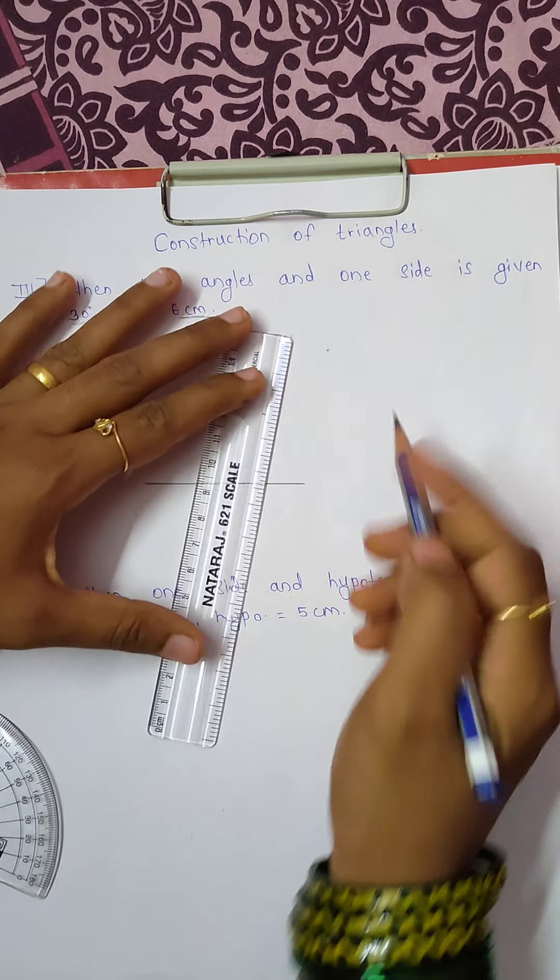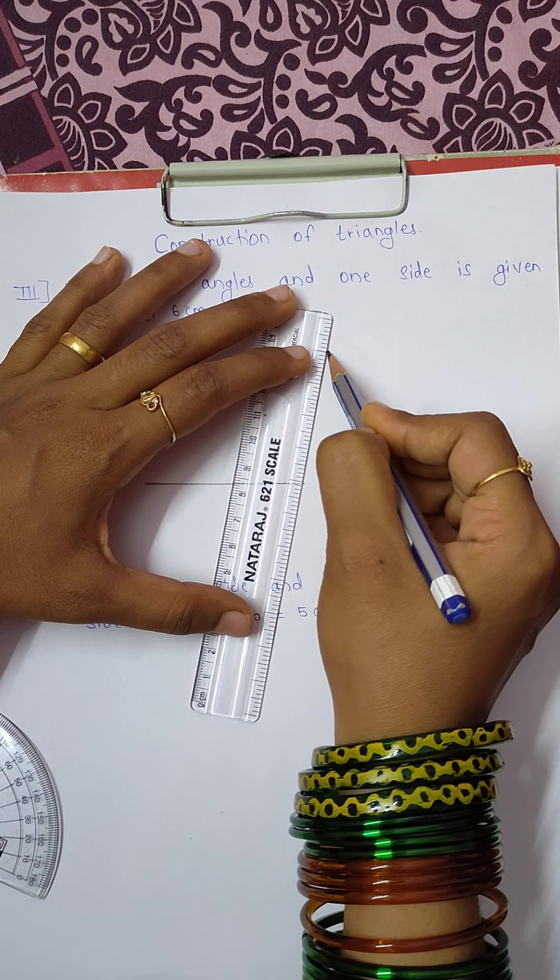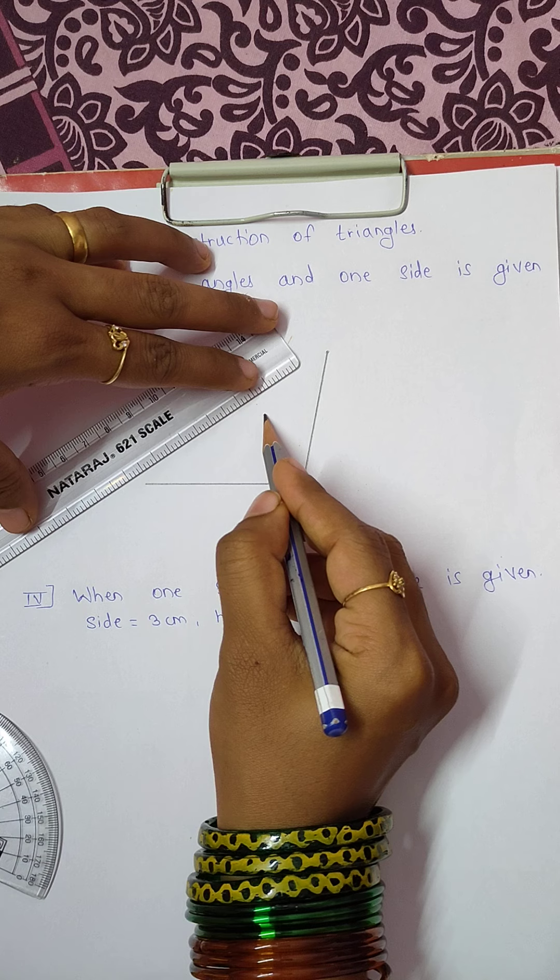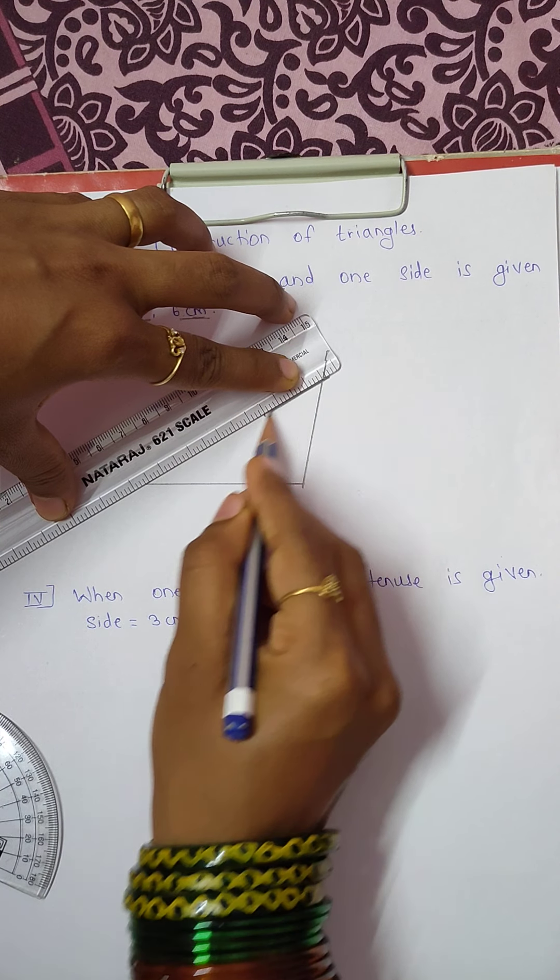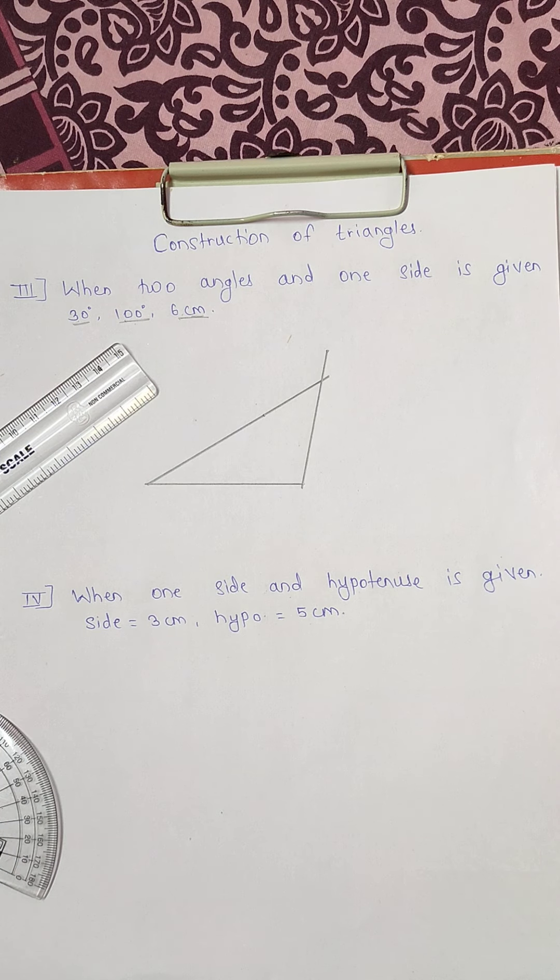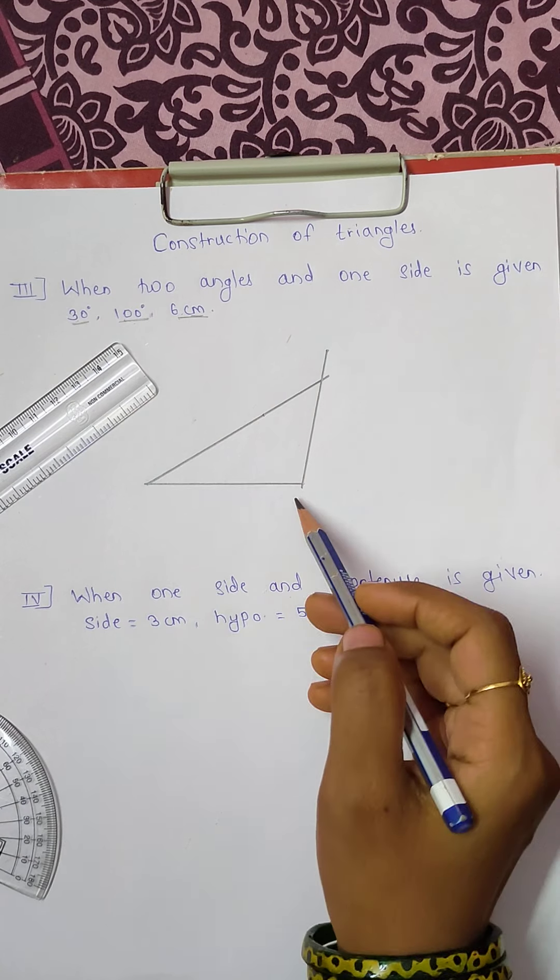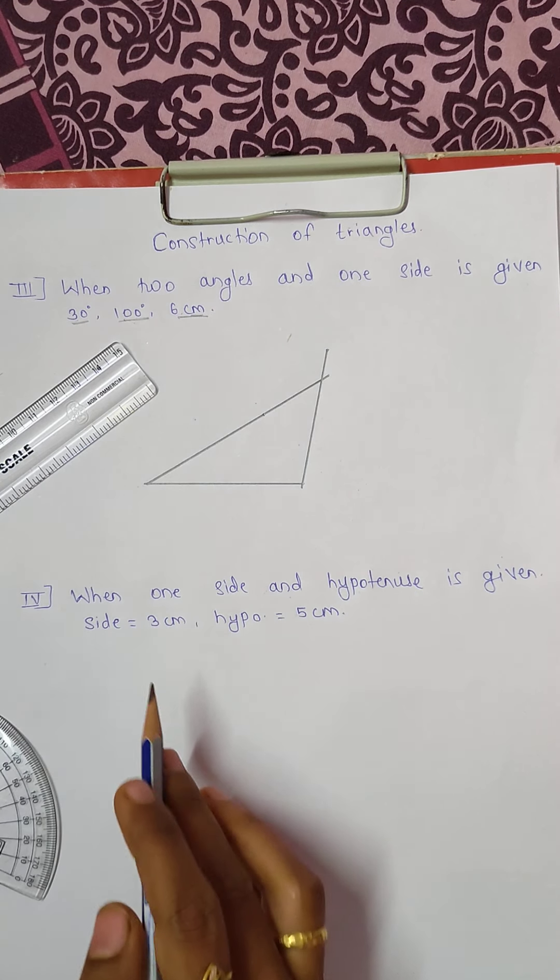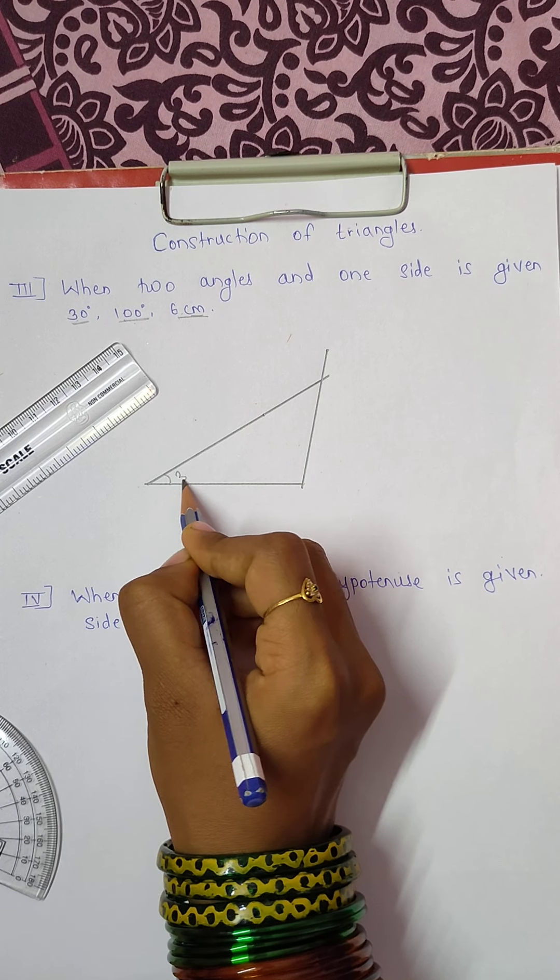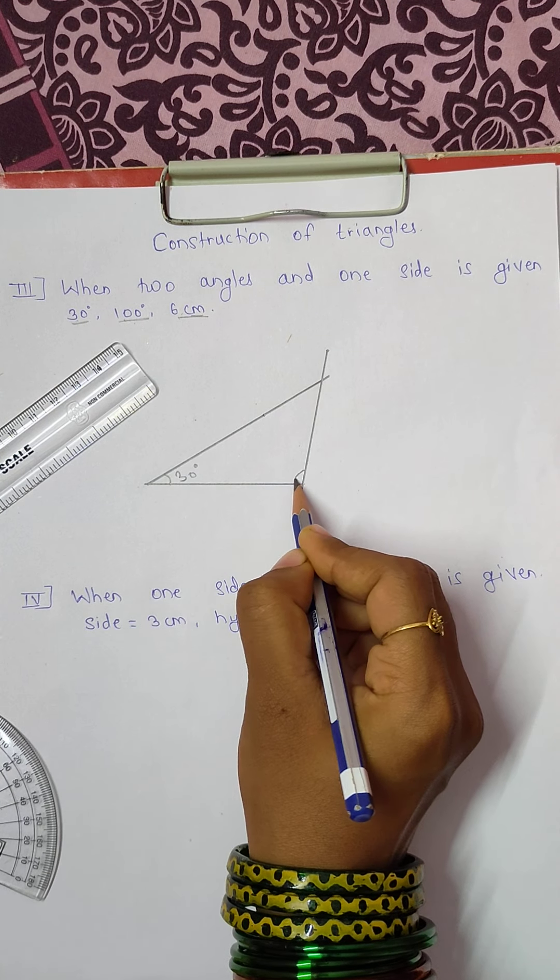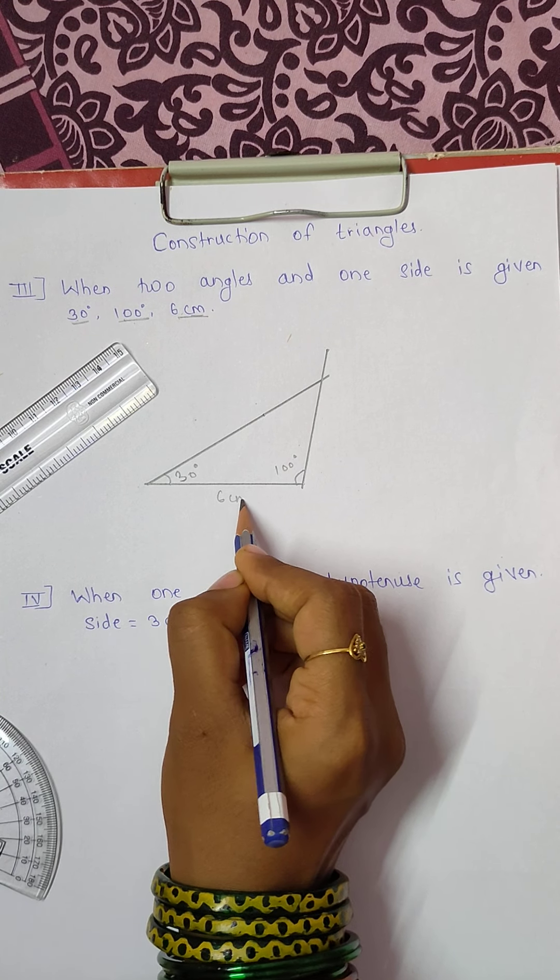Let's join those. After joining these two lines we obtain a three-sided figure which is a triangle which we required. So this angle is 30 degrees, this side angle is 100 degrees, and this line segment is of 6 centimeters.